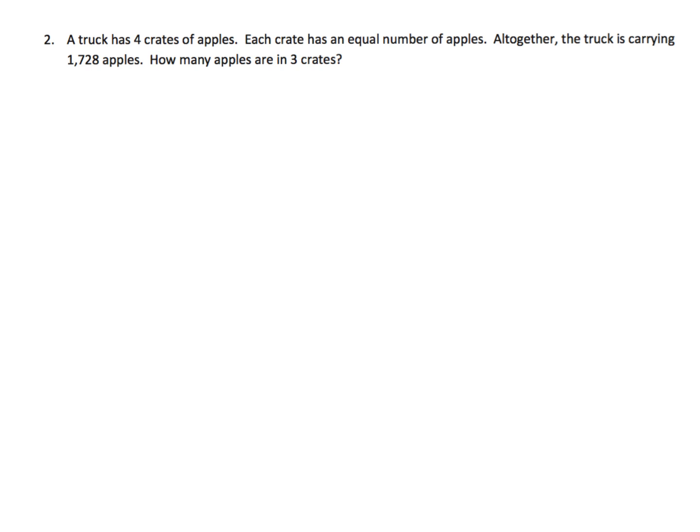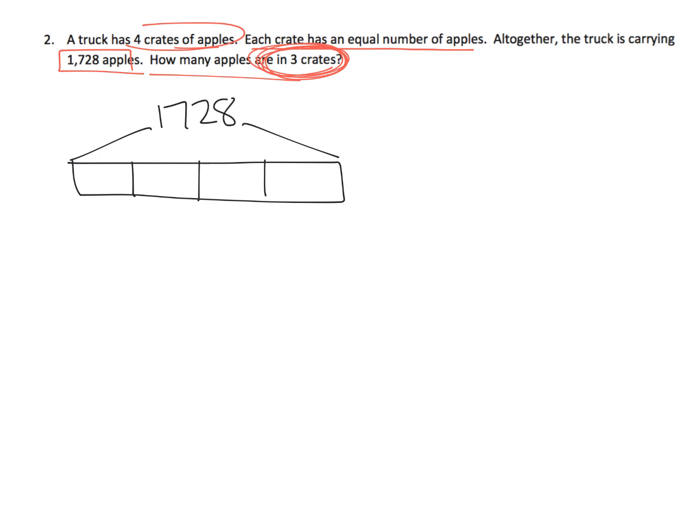And a simple word problem just to continue practicing. It says a truck has 4 crates of apples. Each crate has an equal number of apples. That's the important thing. That's going to suggest division in this case. Altogether, the truck is carrying 1,728 apples. How many apples are in 3 crates? Now this is really important. How many apples are in 3 crates? So first, let's use a tape diagram to represent the 4 crates. And that the 4 crates has 1,728 apples. And the first thing we're going to do is figure out how many apples are in 1 crate. And so that means we are going to use division 1,728 divided by 4. And that's going to tell us how many apples are in 1 crate.